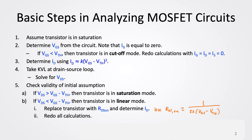If VGS is greater than VTH, then we proceed to step 3. We determine the drain current using the drain current equation for a transistor in saturation. After getting the drain current, we then take the KVL at the drain-source loop to solve for VDS. Once we have solved for VDS, we check the validity of our initial assumption by checking if VDS is indeed greater than VGS minus VTH. That means our initial assumption that the transistor is in saturation is correct.